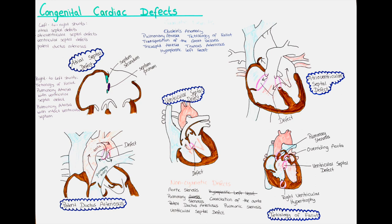Some patients may have tachypnea and tachycardia at rest. The first heart sound is usually normal while the second heart sound is widely split. A systolic ejection murmur is usually heard loudest at the upper left sternal border and can also be heard over both lungs. In patients with larger defects, a mid-diastolic rumbling sound can also be present, heard at the left lower sternal border.